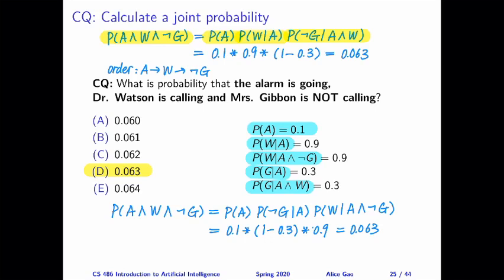Probability of A, we have 0.1. Probability of W given A, we have 0.9. Now probability of not G given A and W, we don't have that. What do we do here?